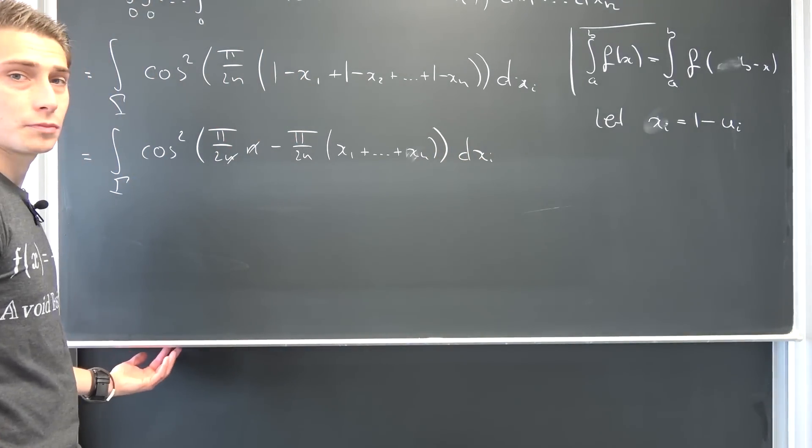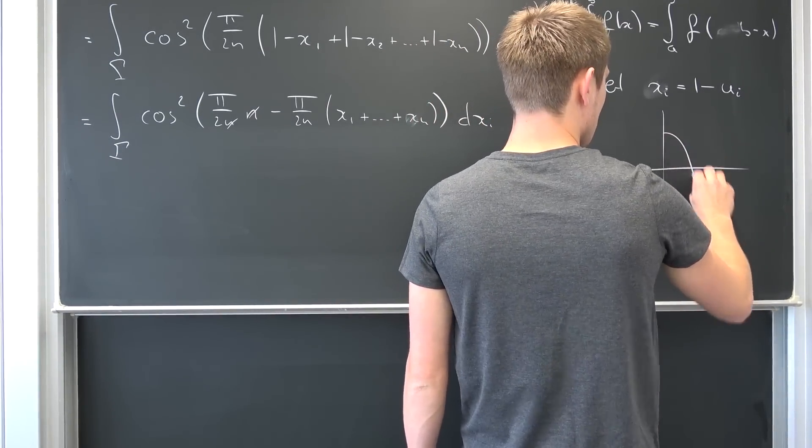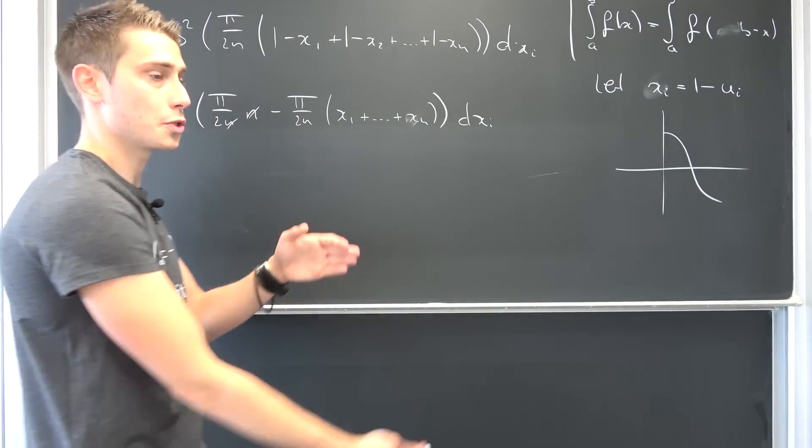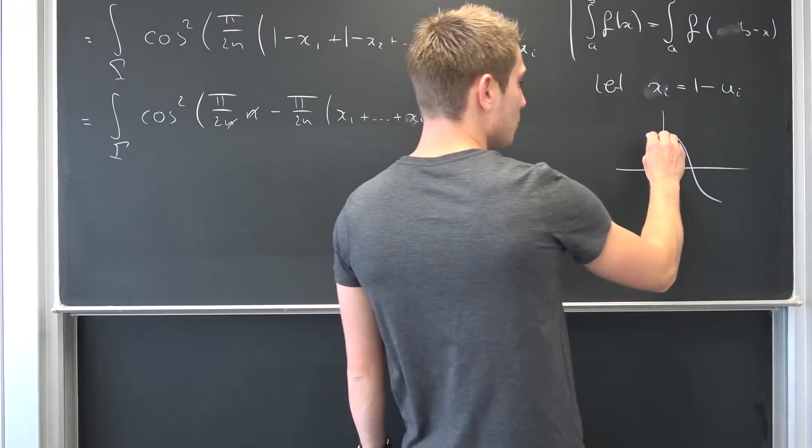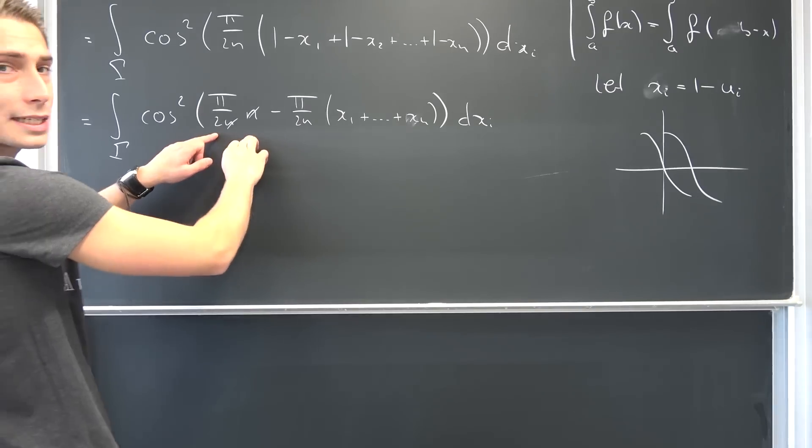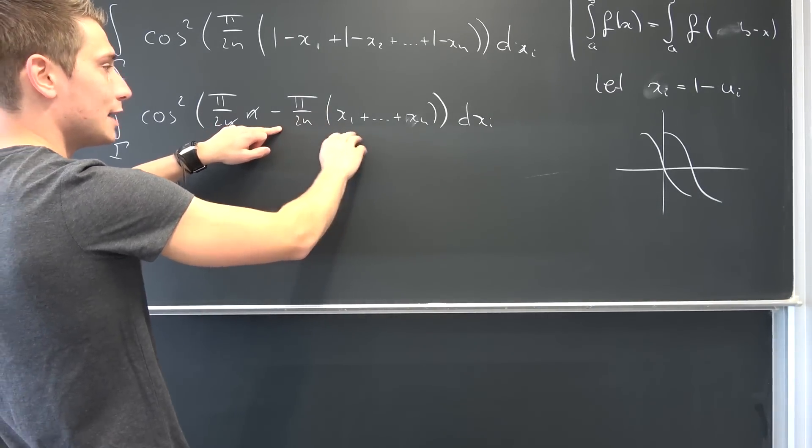And now, you might notice something if you take a look at the graph of the cosine. We have the cosine right here. If we were to shift this big boy pi over 2 to the left in this case, we would actually end up with the sine. This thing right here is just the sine of negative pi over 2n times this chunk.